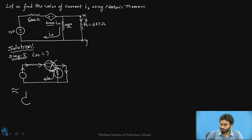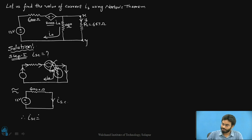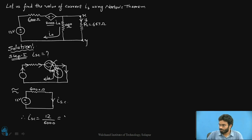We redraw the simplified circuit with only the independent 12-volt source in series with 6000 ohms — the dependent source and 1000-ohm resistor are gone, and the load is replaced by a short circuit. Applying Ohm's law: ISC = 12 volts / 6000 ohms = 2 milliamps. This completes step one.